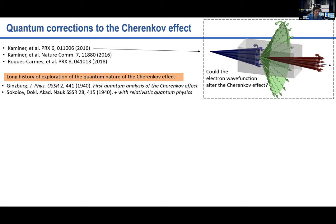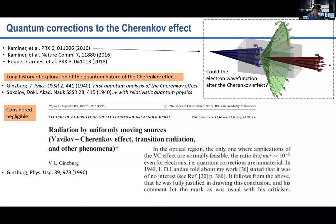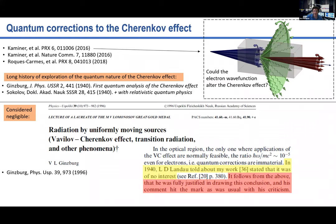Here's an interesting anecdote about quantum corrections to the Cherenkov effect. From a paper Ginzburg wrote in 1996 — 56 years after his PhD — he explains why quantum corrections are very small, and quotes that Landau told him in 1940 that his work 'was of no interest,' adding that 'he was fully justified in drawing this conclusion.' I can just imagine a PhD student Ginzburg receiving that feedback from Landau. What's amazing is that by looking at somewhat different features, and using experimental techniques that didn't exist back then, we can find corrections that are not negligible.